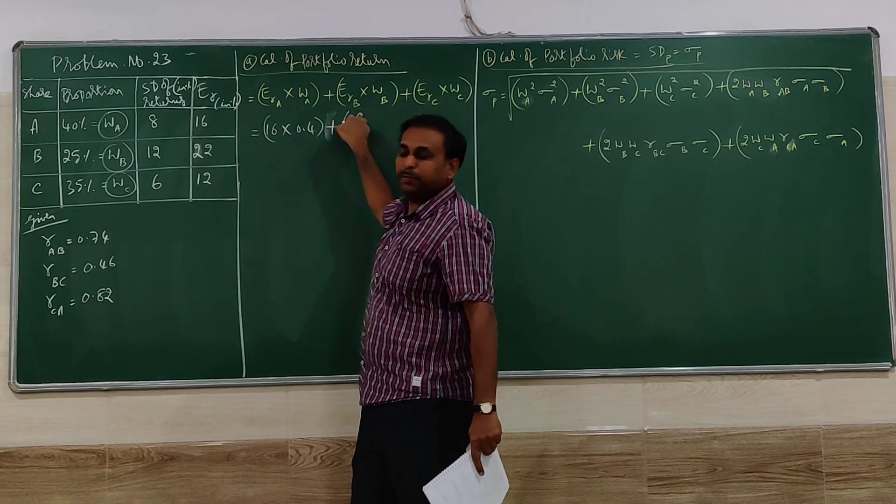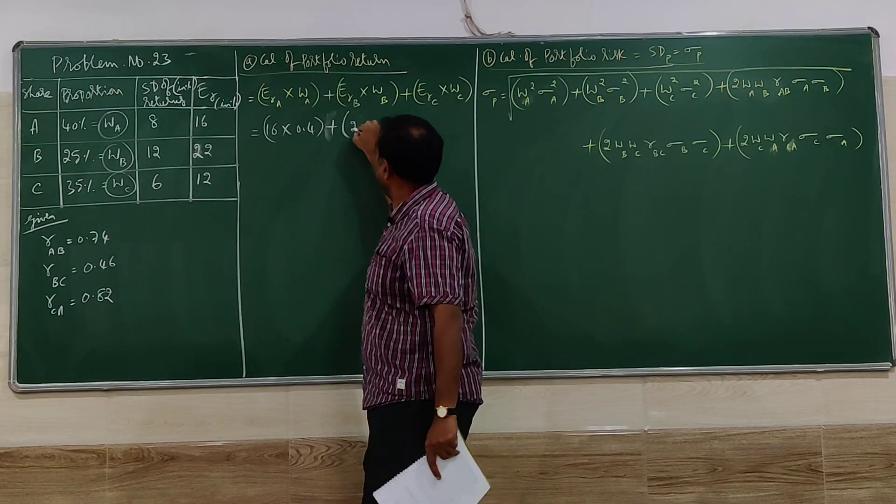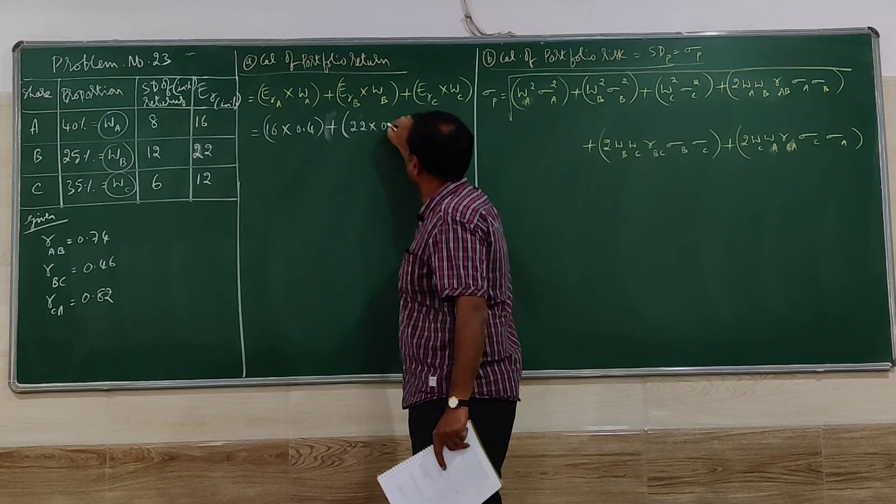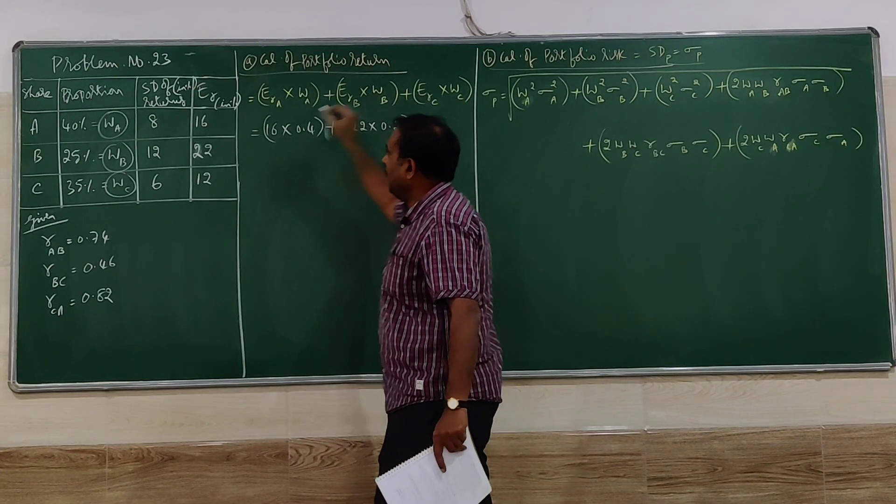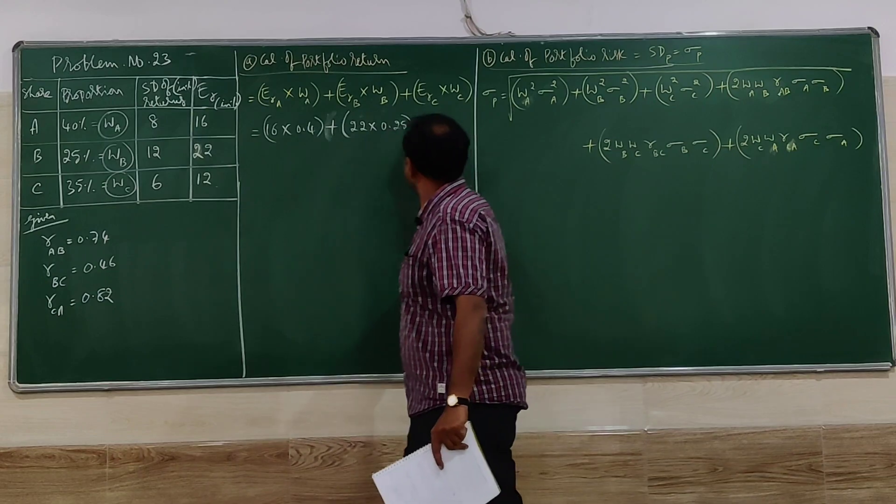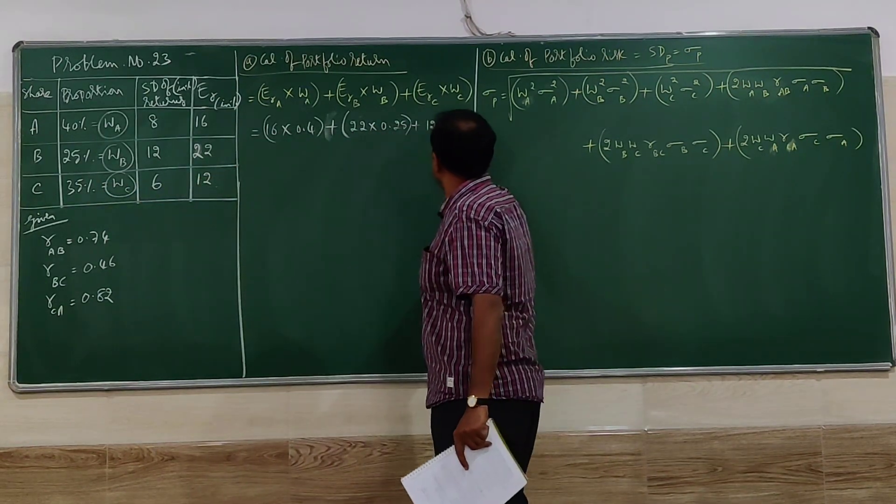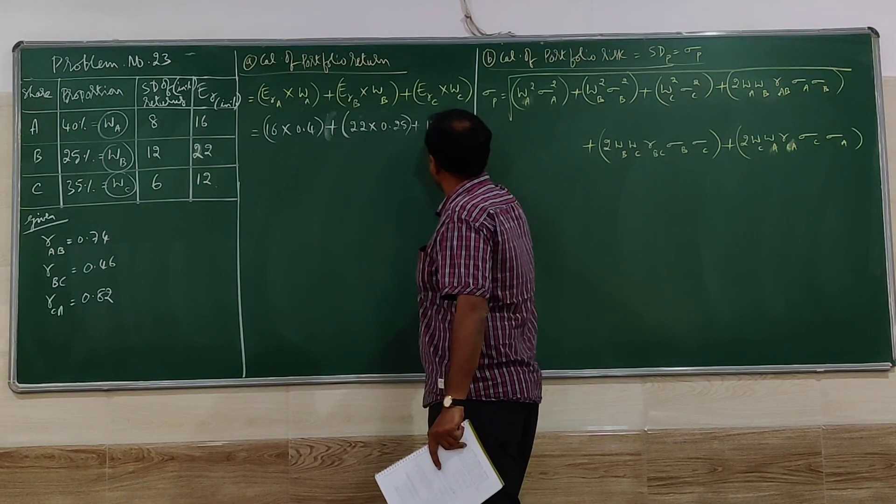Plus expected return of B, 22, weight of B, 0.25. Similarly, expected return of C, 12, weight of C, 0.35.